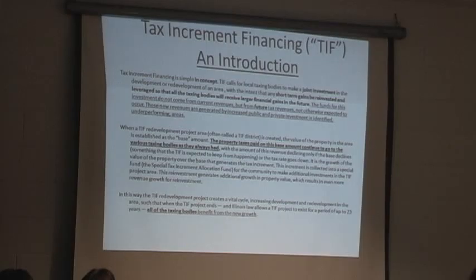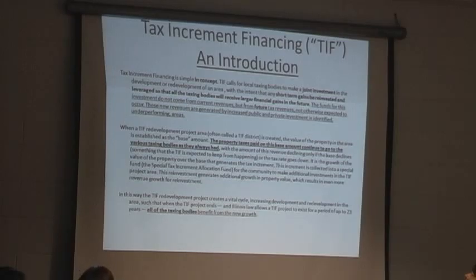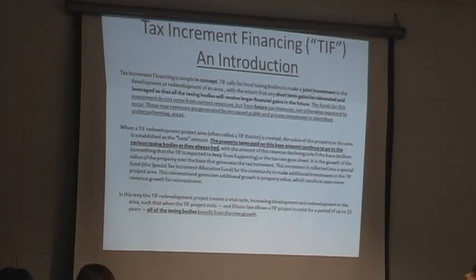When a TIF district project area is created, the value of the property in the area is established as the base amount. The property taxes paid on this base amount continue to go to the various taxing bodies as they always had. You establish a base year — that amount keeps being generated and does not change at all. What happens is that the incremental change in value of the property over the base is what generates the tax increment.